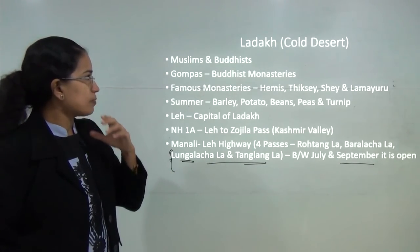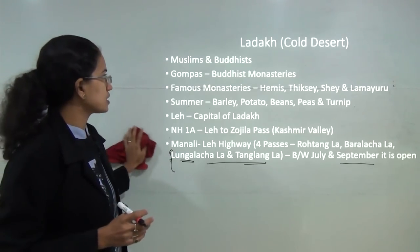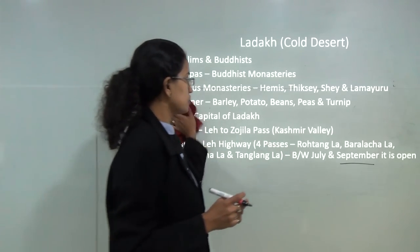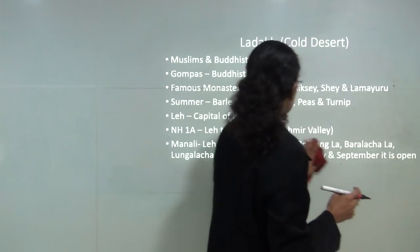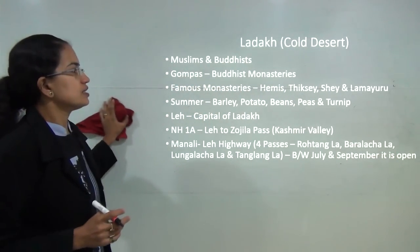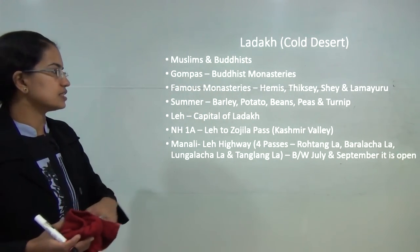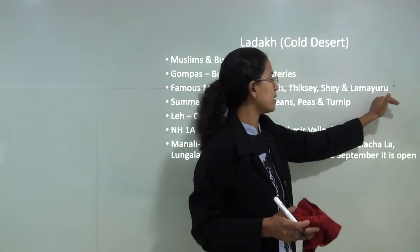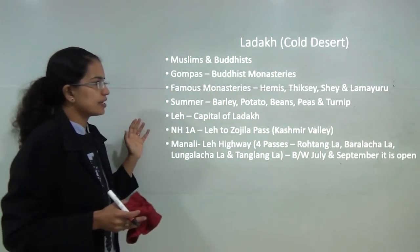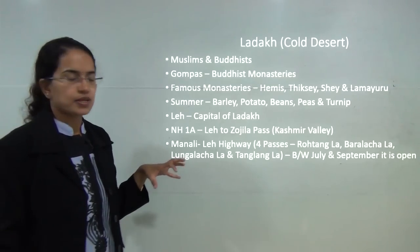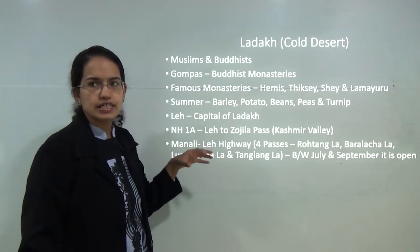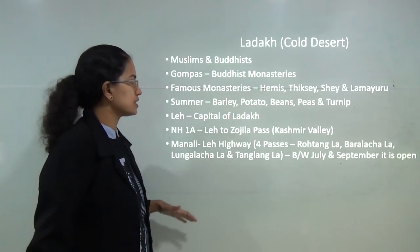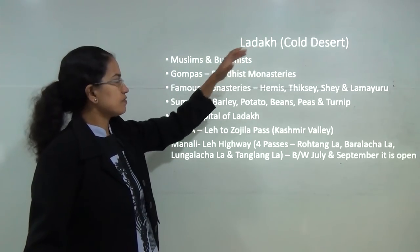The population here is mainly Buddhist and Muslim. Since there are numerous Buddhists, you have gompas — Buddhist monasteries — seen here. Some of the famous monasteries of this region are Hemis, Thiksey, Shey and Lamayaru. In summer there is also small-scale production of crops, which includes barley, potato, beans, peas and turnips. The capital of Ladakh is Leh.